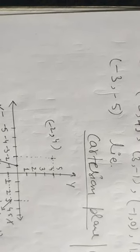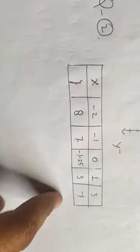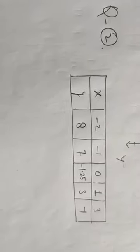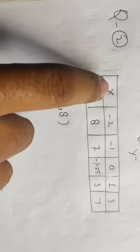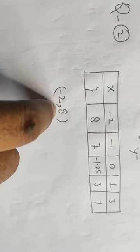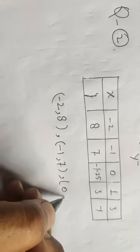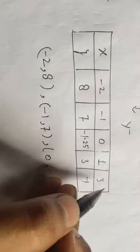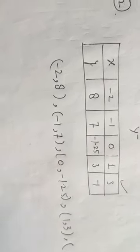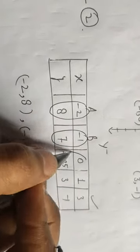Question number two: plot the following points (x, y) given in the table on the plane, choosing suitable units of distance on the axis. This question is simpler compared to the previous one. The points are: A = (-2, 8), B = (-1, 7), C = (0, -1.25), D = (1, 3), and E = (3, -1). The first coordinate represents the distance on the x-axis and the second represents the distance on the y-axis.